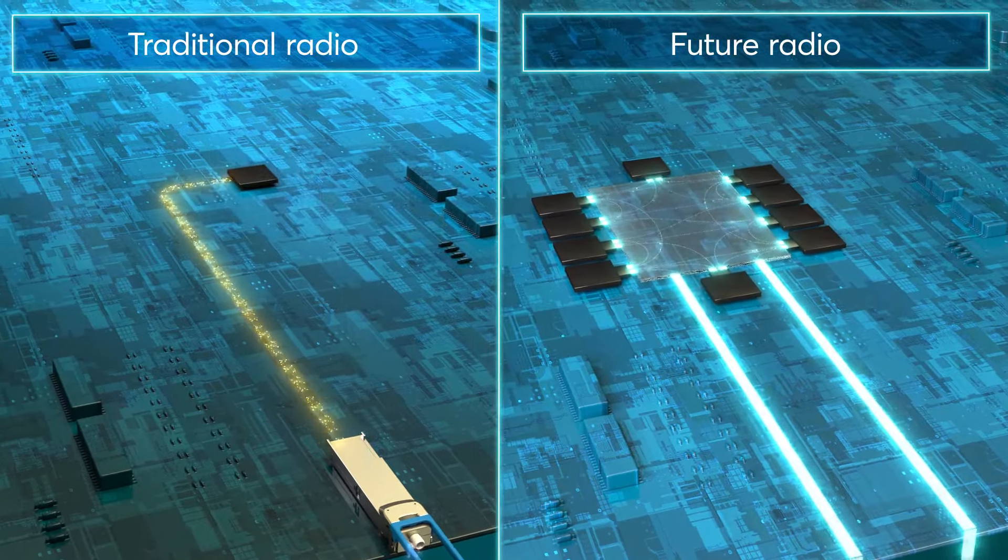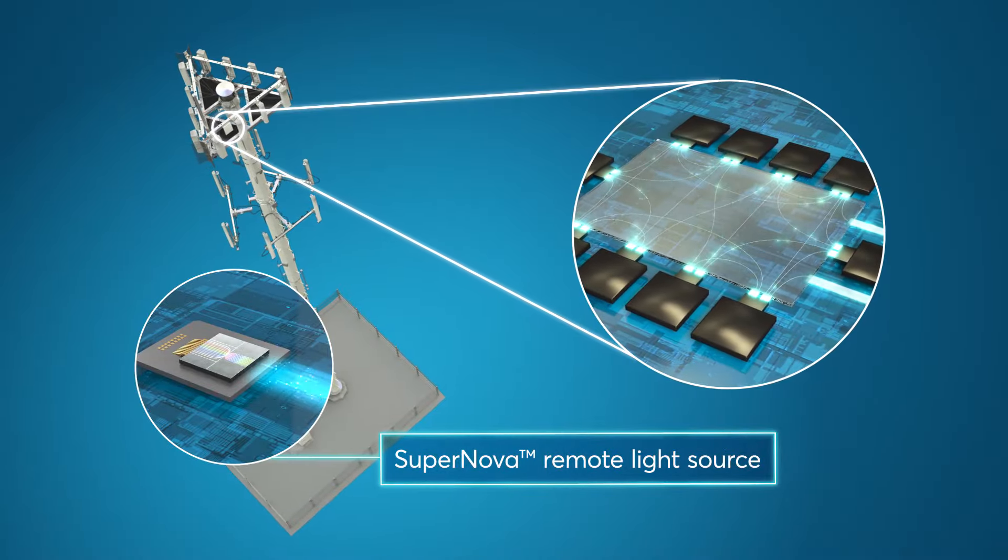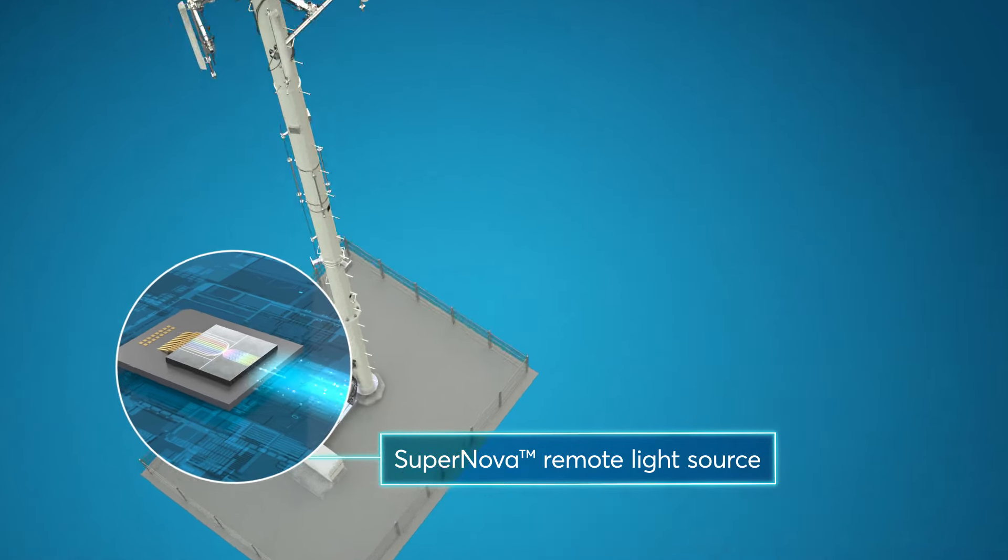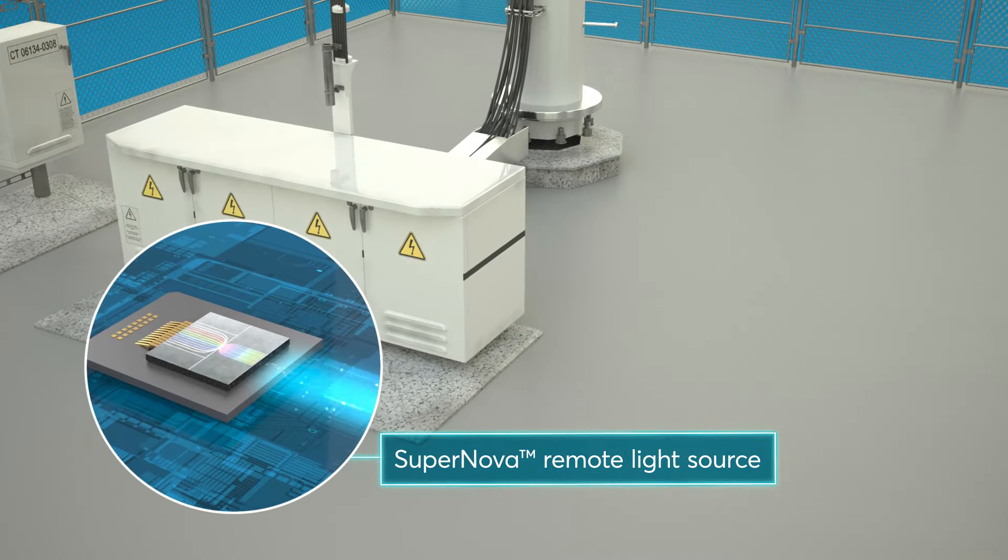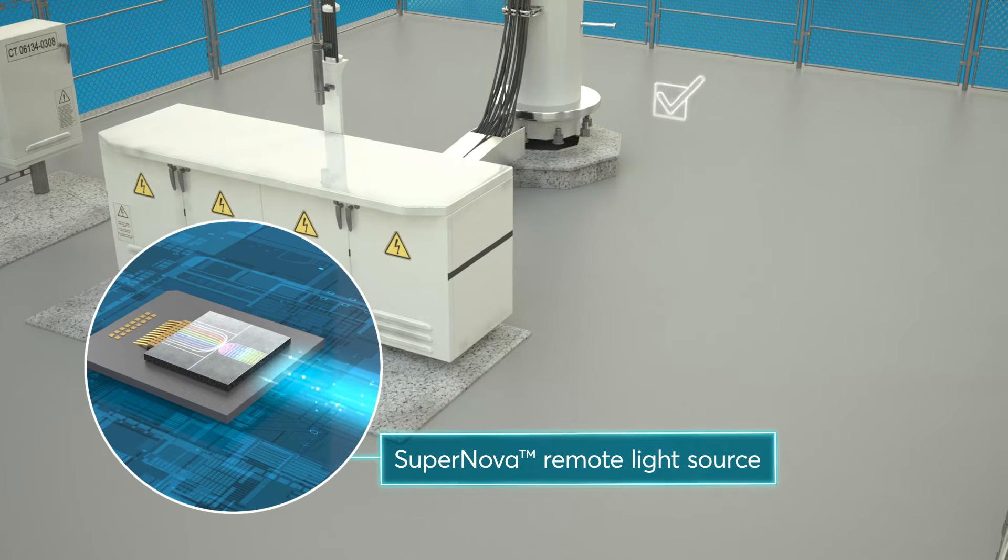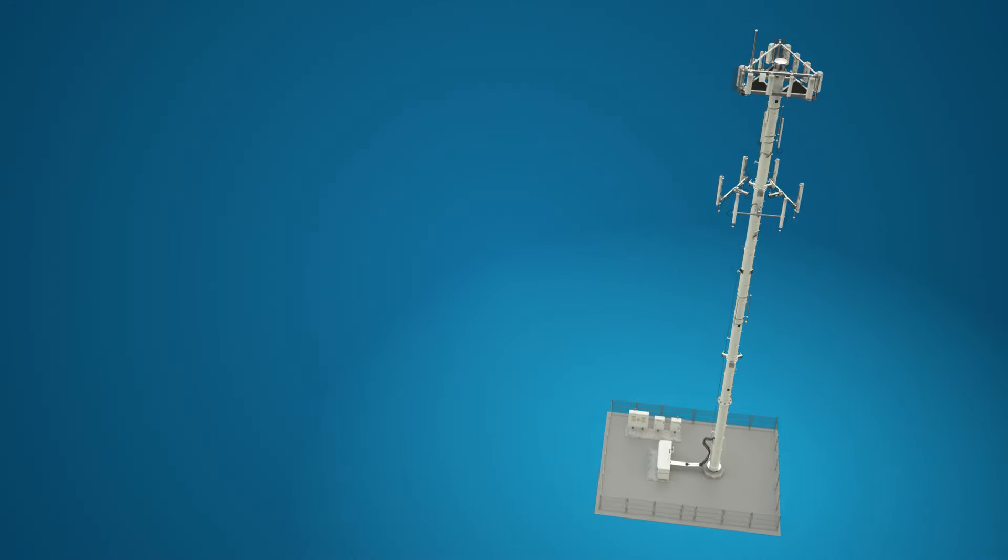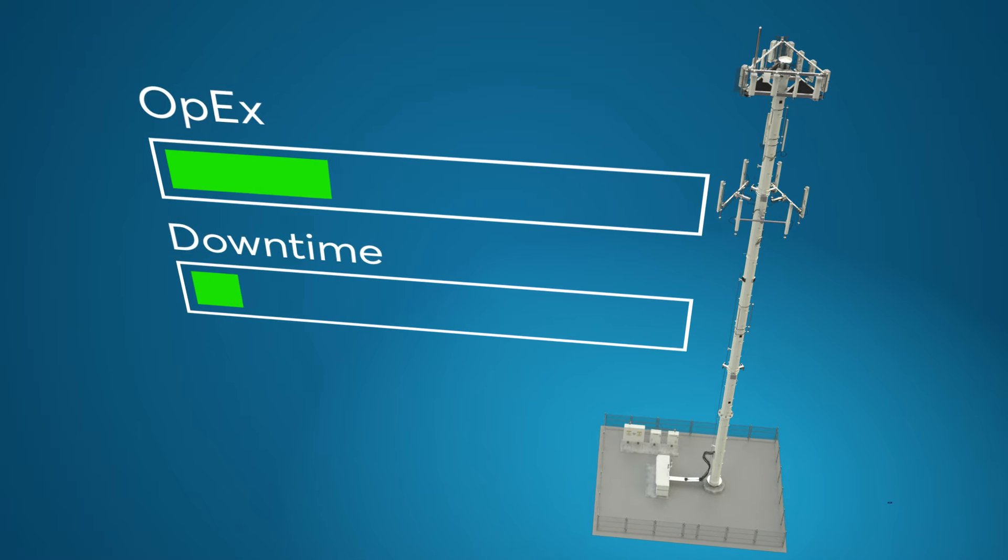This joint solution is also unique in that the IR Labs Supernova Remote Light Source can be disaggregated from the radio and placed in a remote location, protected from harsh temperatures while making it far simpler, faster, and safer to service. This provides network operators with reduced costs and downtime.